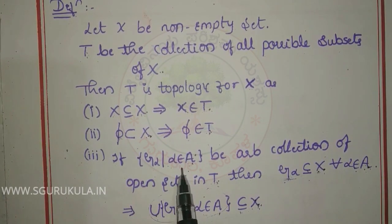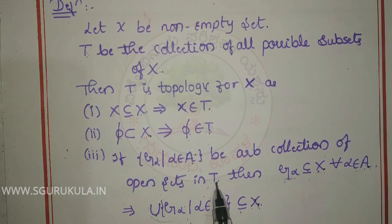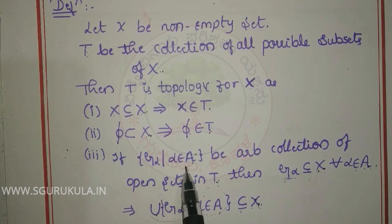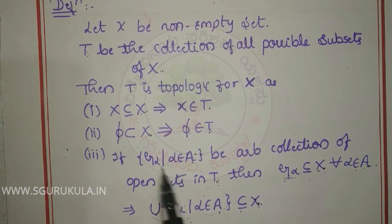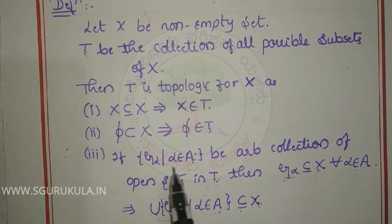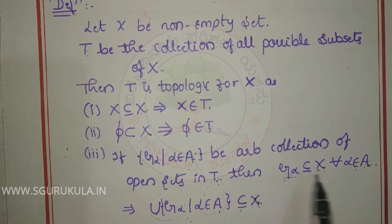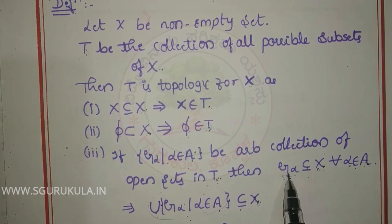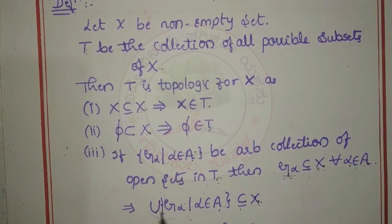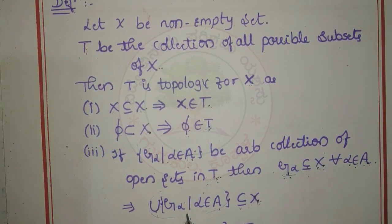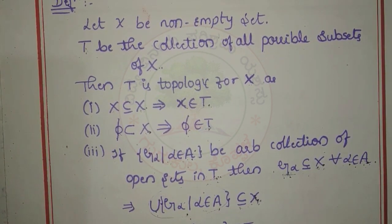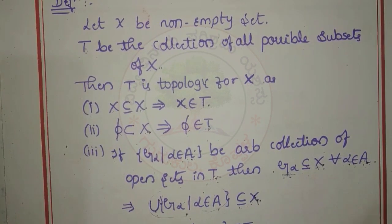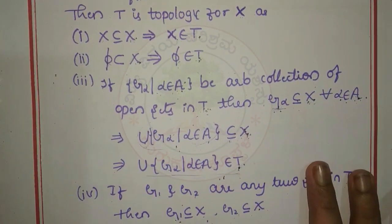Third condition: let G-alpha, such that alpha belongs to A, be an arbitrary collection of open sets in T. Since T is a collection of all subsets of X, for any alpha, G-alpha is a subset of X. Therefore the union of G-alpha also belongs to X, and hence belongs to T.